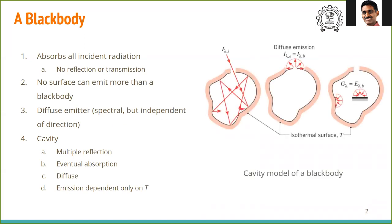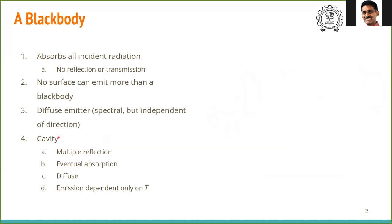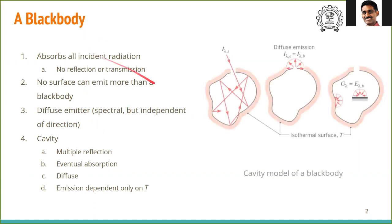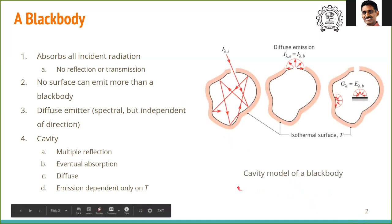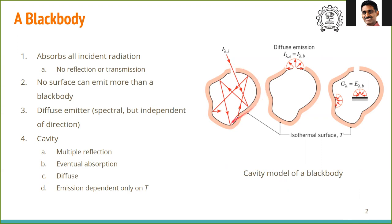There are no ideal blackbodies, although some pigments approximate blackbody radiation. A good model for blackbody radiation is what is known as the cavity model. In the cavity model, you have a hollow cavity of irregular shape with a small hole on top, and the outer surface is maintained at a constant temperature T.